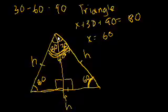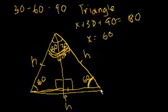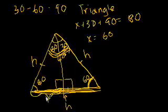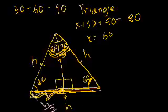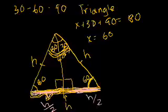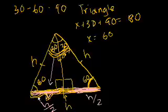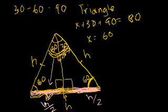But our original problem only used half of this equilateral triangle. The whole bottom side of the equilateral triangle has length h, so the base of our original triangle — just half of that — is h over 2. So we've derived that the side opposite the 30-degree angle is half of the hypotenuse. We doubled the triangle into an equilateral triangle, showed the full base equals the hypotenuse, and our triangle's base is half of that.